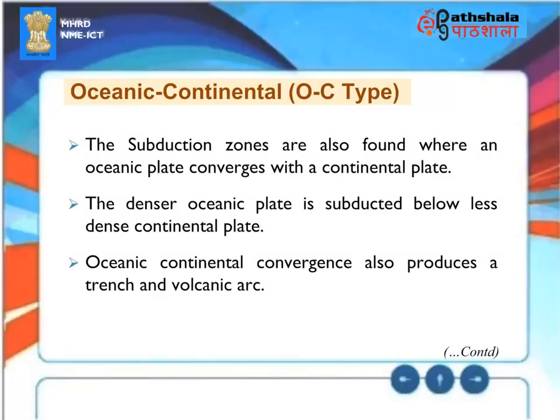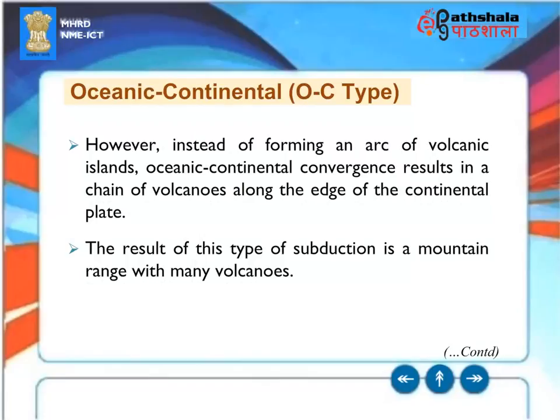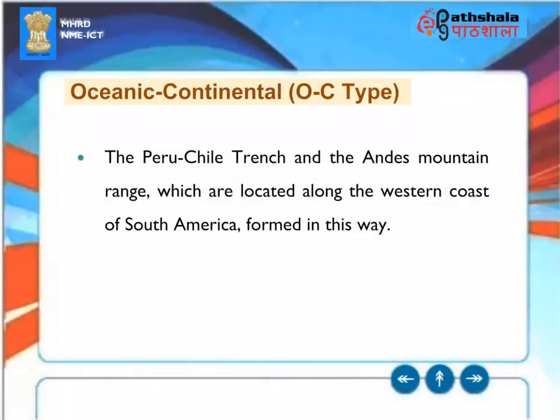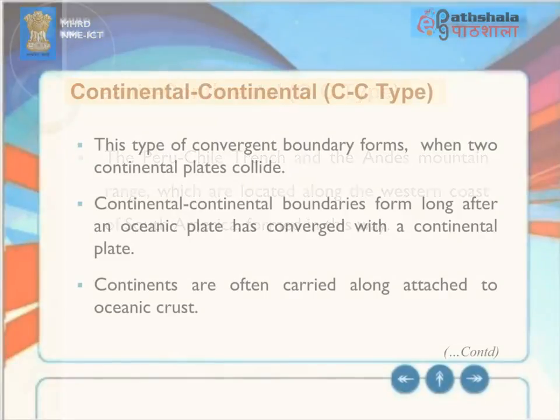Subduction zones are also found where an oceanic plate converges with a continental plate (O-C type). The denser oceanic plate is subducted below the less dense continental plate. Oceanic-continental convergence also produces a trench and volcanic arc. The Peru-Chile Trench and the Andes Mountain Range, located along the western coast of South America, formed in this way.